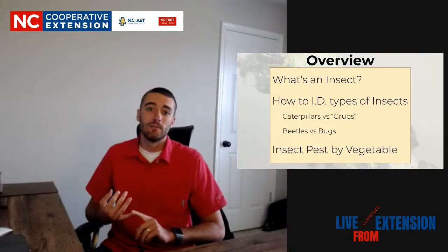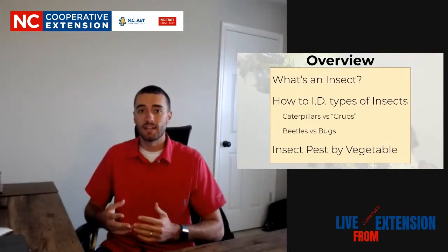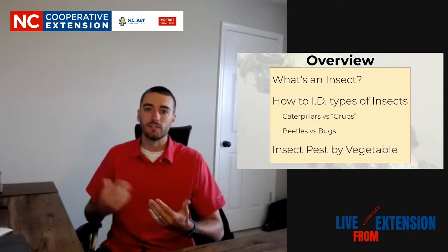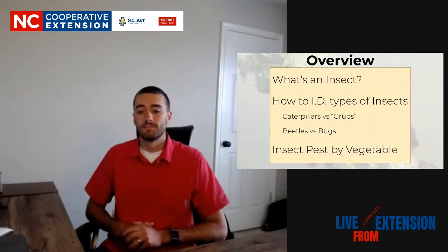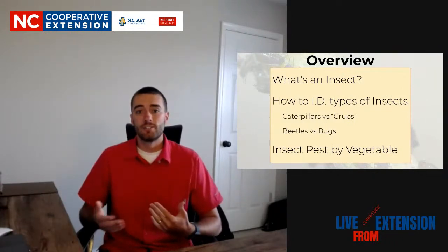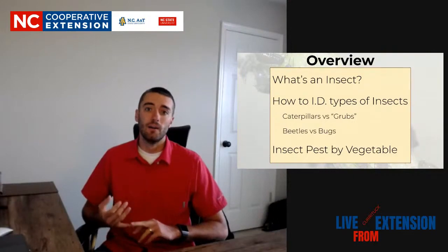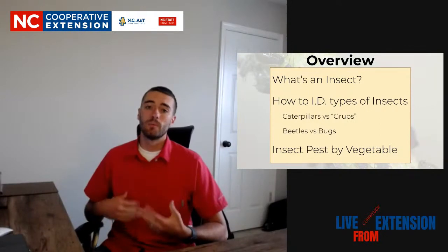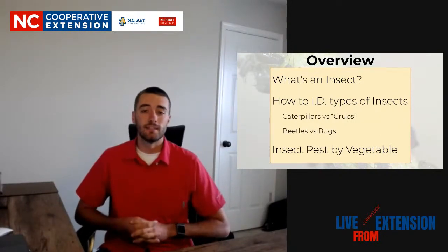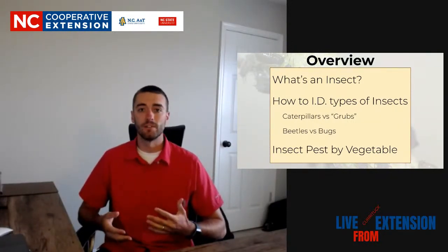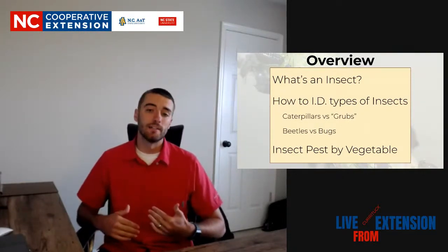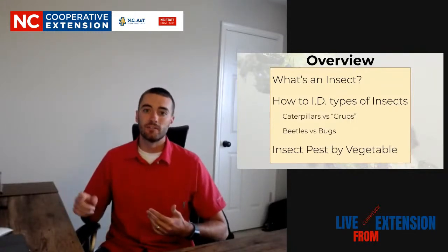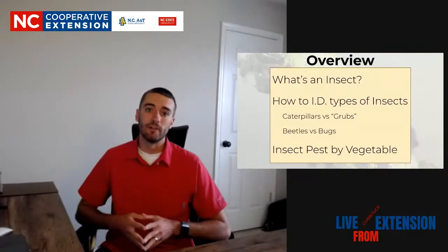We'll talk about how to identify different types of insects that look really similar — things like caterpillars and grubs look similar, and if you can tell them apart that rules out a whole lot of different insects. Then we're going to go by vegetable type and list insects, talking about what they are, how to get rid of them, and when you'll see them. My goal is that you'll have this as a resource to come back to when you're gardening in the summer and see something familiar.